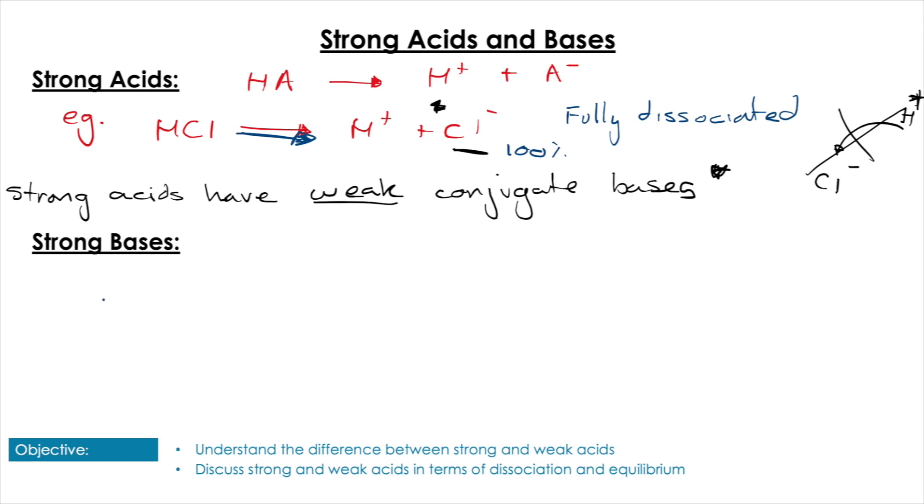Now the same thing is true when we look at our strong bases. If we take BOH, it's a representation, it's going to break down into B+ and OH-. Again, examples of this are your group one hydroxides going to break down fully and we're going to assume full dissociation. That's the characteristic of our strong acids and bases: full dissociation.